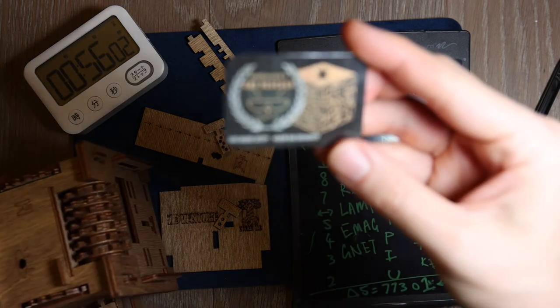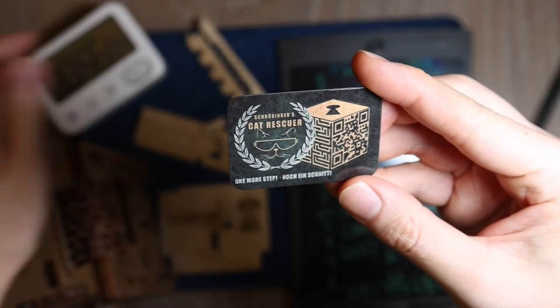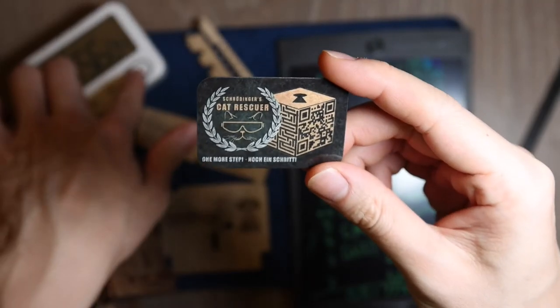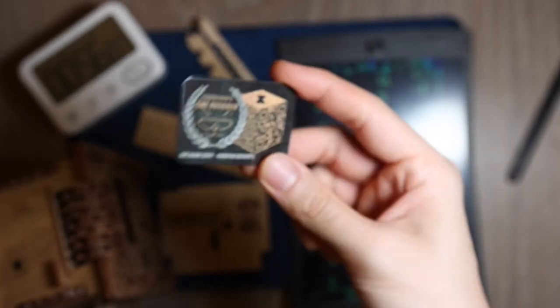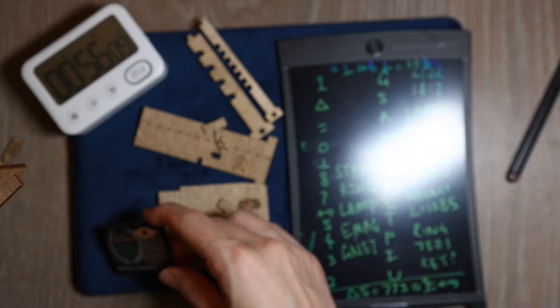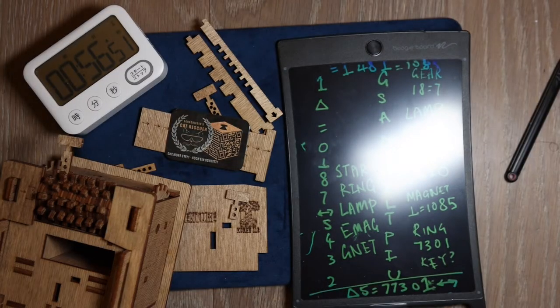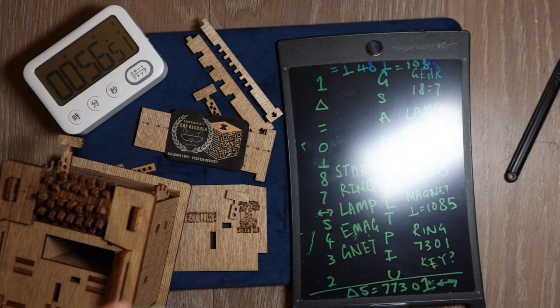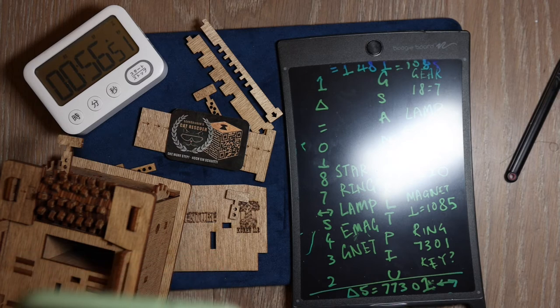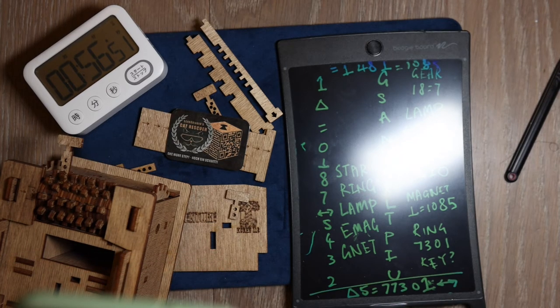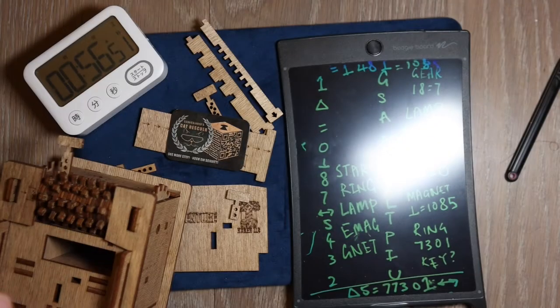And it seems there is some sort of a message in the compartment. There's some sort of a magnet and it says Schrodinger's Cat Rescuer. And there's a QR code. I took out my phone and quickly scanned the QR code to make sure I'm not missing out anything at the end. And surely this is the leaderboard and basically to register that I have completed the box.